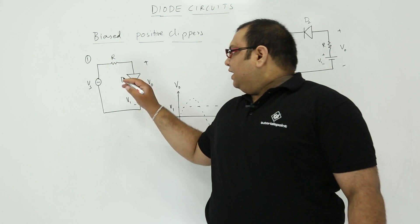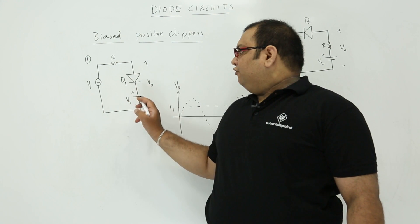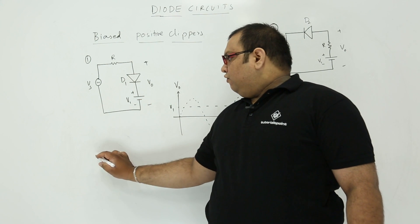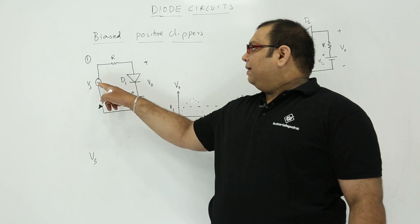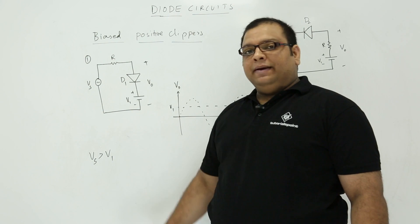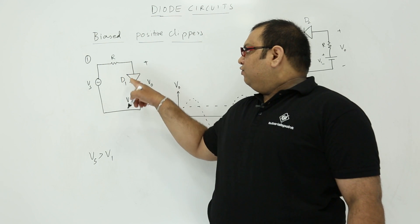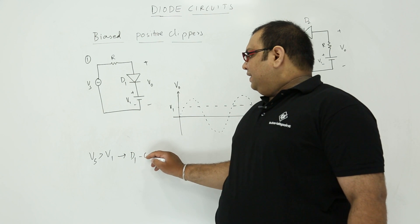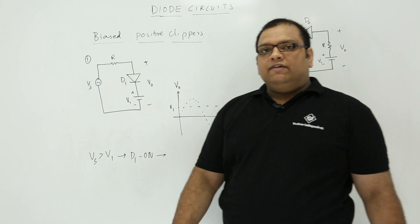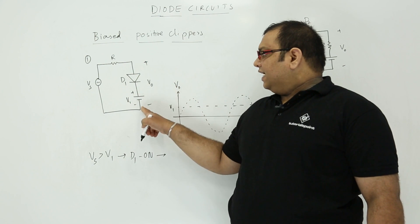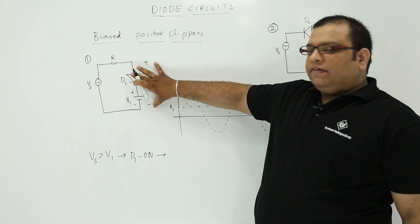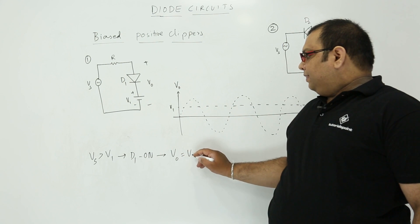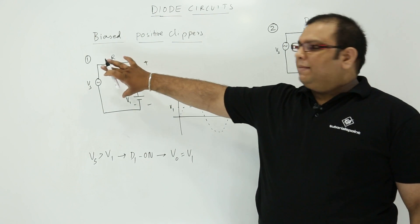Now let us consider when the diode is conducting. At the negative side we have V1, so at the positive side the voltage should be more than V1. The condition is when Vs, the supply voltage, is more than V1. When the voltage is more than V1, the diode will conduct. Diode D1 is in on condition, and the voltage across it is the same as V1. So during this period, the output voltage is same as V1.